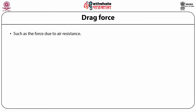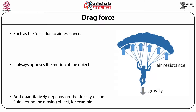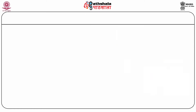Drag force, such as air resistance, always opposes the motion of the object. Quantitatively, it depends on the density of the fluid around the moving object and the area in contact with the fluid. For example, a person with a parachute lands because of weight pulling toward the ground, while the drag force from air resistance tries to hold them up. If the gravitational force and drag force balance each other, the person simply floats in the air.